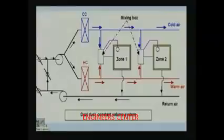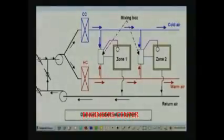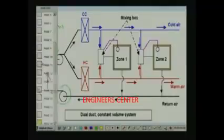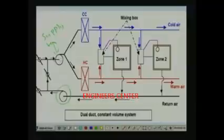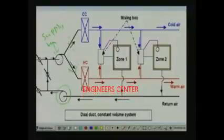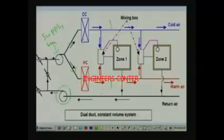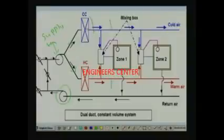Let me show the schematic of this system. Here is your supply fan. Some amount of recirculated air and some amount of outdoor air are mixed, and the supply air fan then splits this flow into two streams, which flow through two ducts — that is why it is called a dual duct system. In duct 1, you have a cooling and humidification coil, meaning air flowing through duct 1 is cooled and humidified to about 13 degrees centigrade.